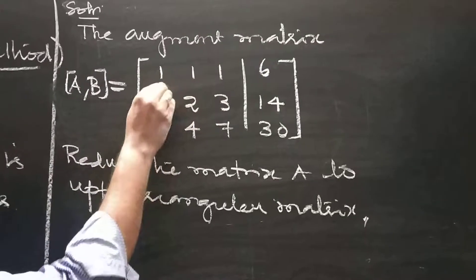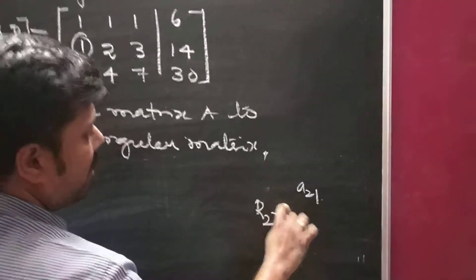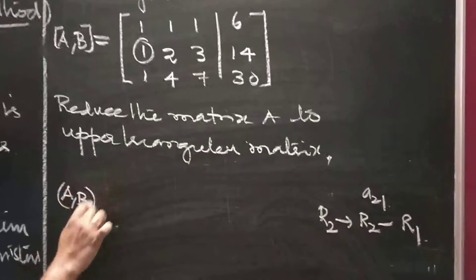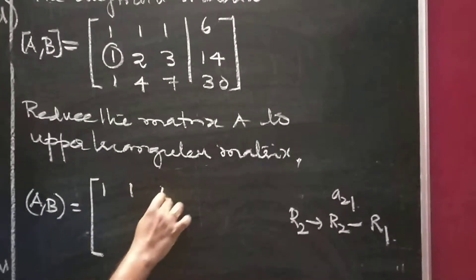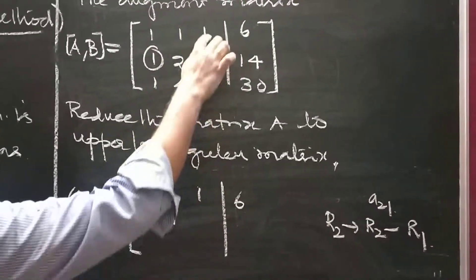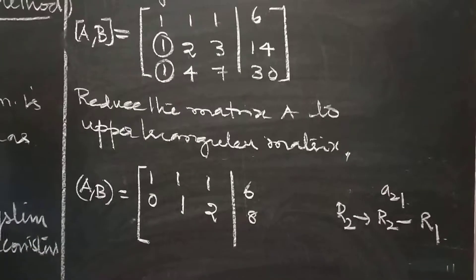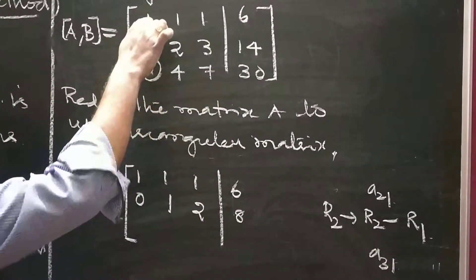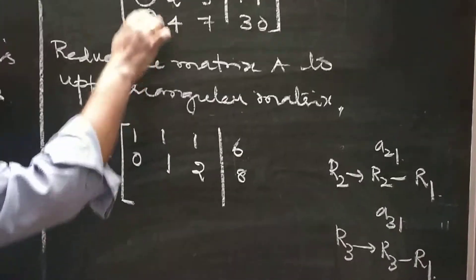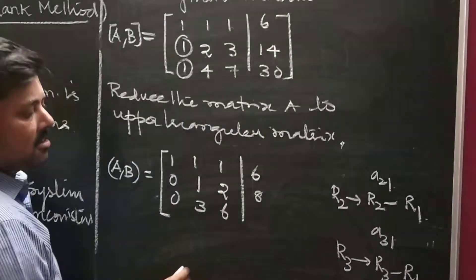First, make A(2,1) equal to 0. Since both R2 and R1 have 1, apply R2 implies R2 minus R1: [0, 1, 2, 8]. Next, make A(3,1) equal to 0. Apply R3 implies R3 minus R1: 1-1=0, 4-1=3, 7-1=6, 30-6=24. Third row becomes [0, 3, 6, 24].